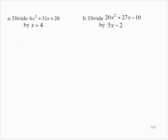Divide 6x squared plus 31x plus 28 by x plus 4. We're going to use a long division process to learn how to do this. x plus 4 divides into 6x squared plus 31x plus 28.